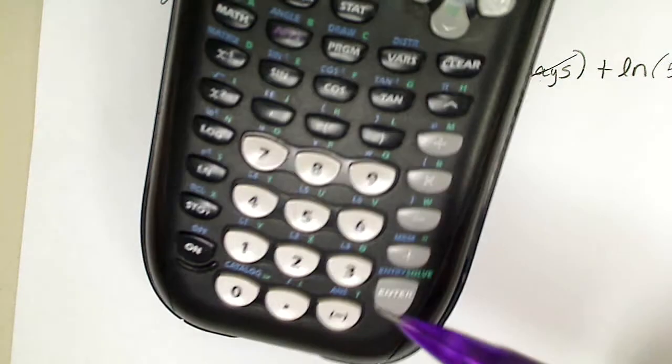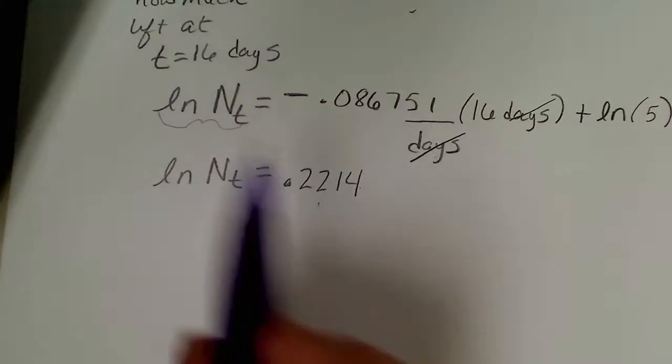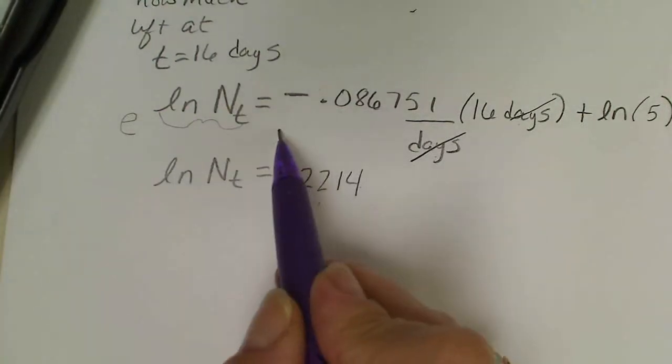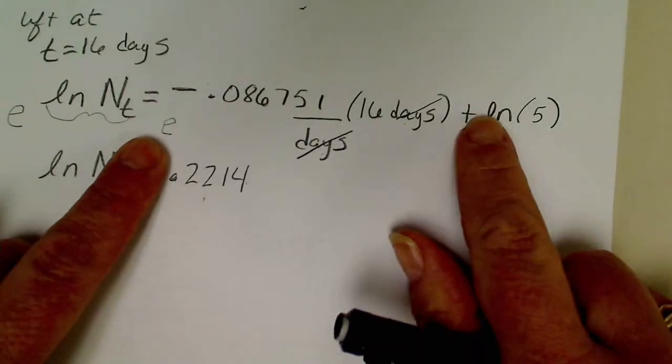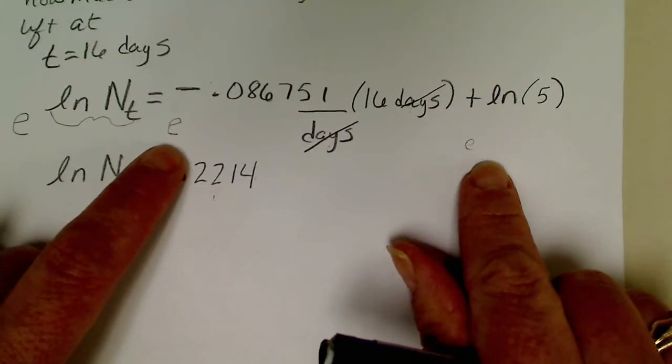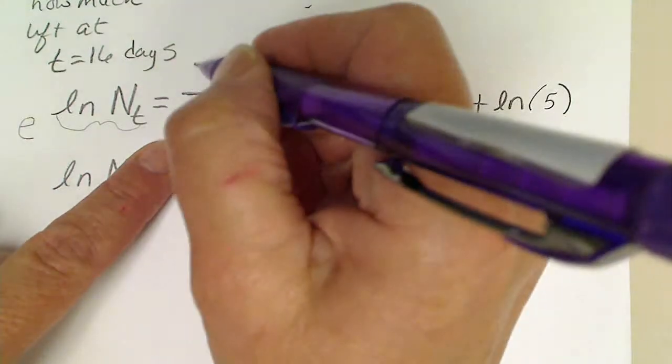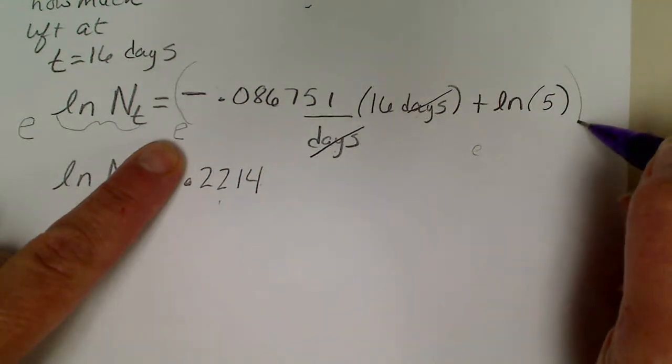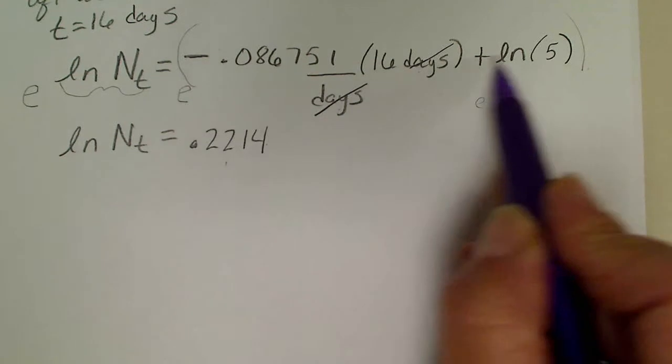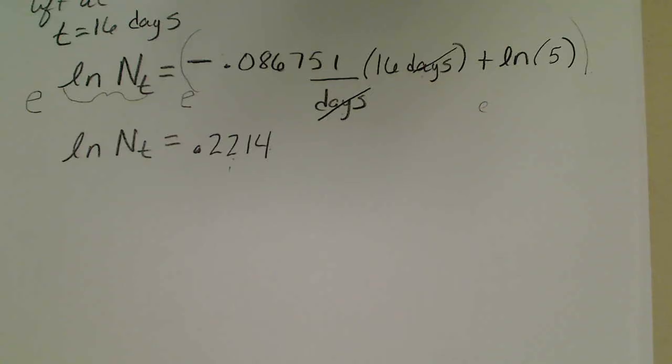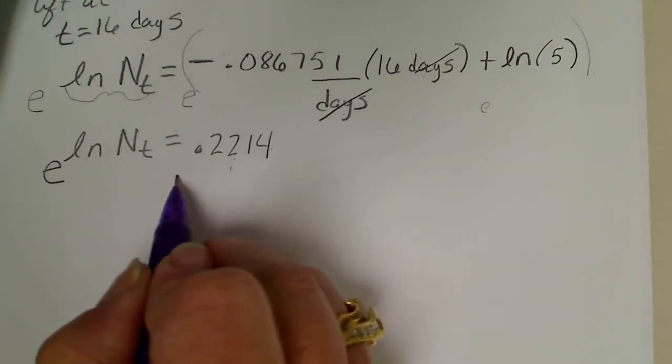To get rid of the ln, to undo that function, we use the eˣ button which is right above the natural log key. If we put e underneath both sides here, we can't put e underneath whenever we have a sum or a difference. So we could solve for that by raising e to the parenthesis, the entire equation, but I find it's just as easy to plug those values in.